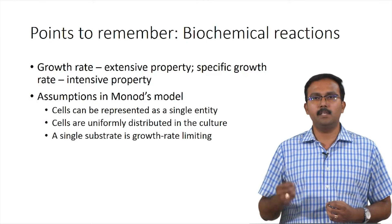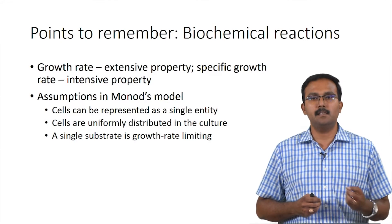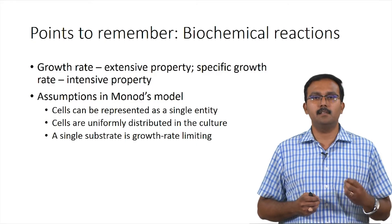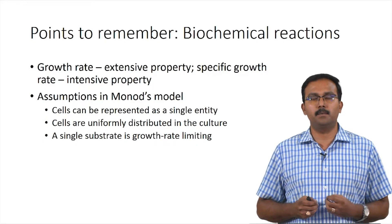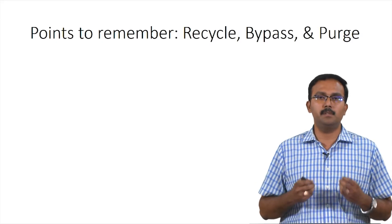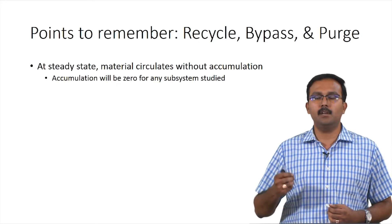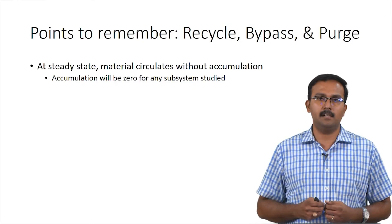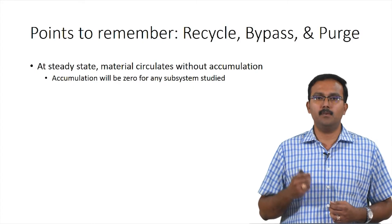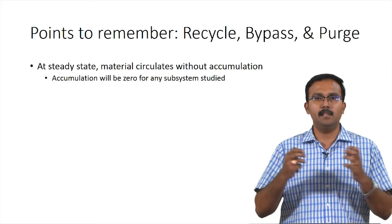Assumptions used in Monod's model are: cells can be represented as a single entity, cells are uniformly distributed in the culture, and cell-substrate interaction is a growth-rate-limited process. When talking about recycle, bypass, and purge, at steady state material circulation happens without accumulation during recycle or bypass — accumulation will be zero for any subsystem studied within the overall system.